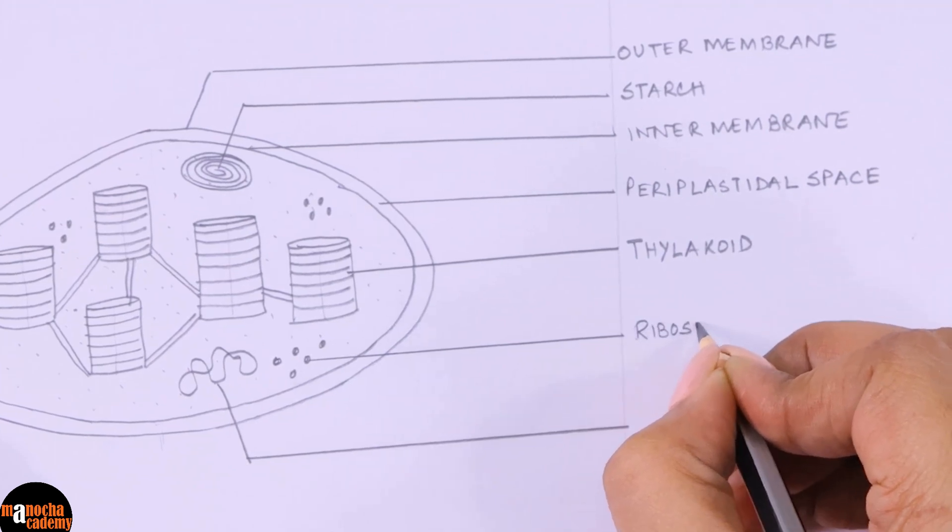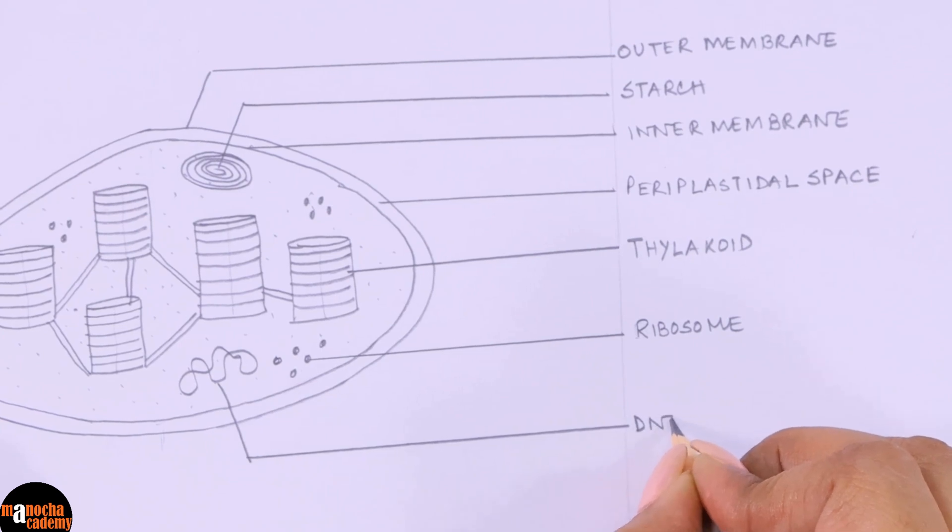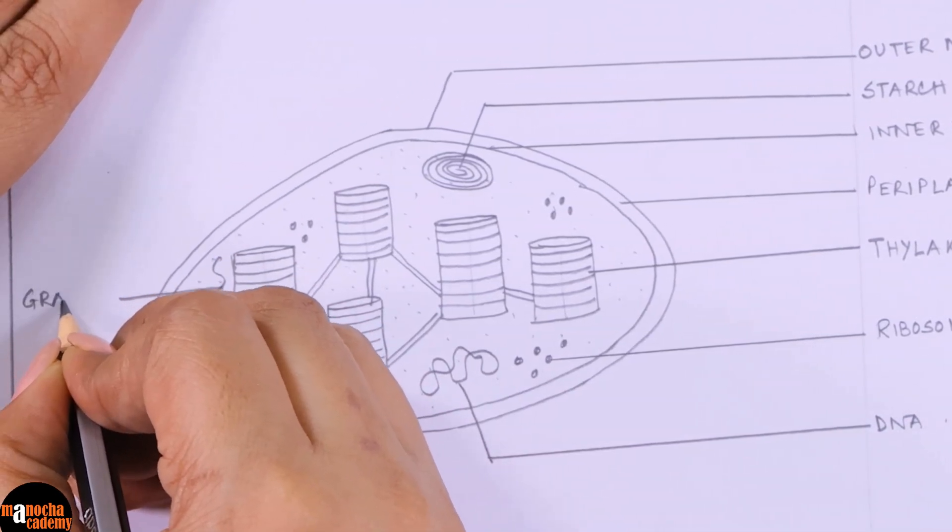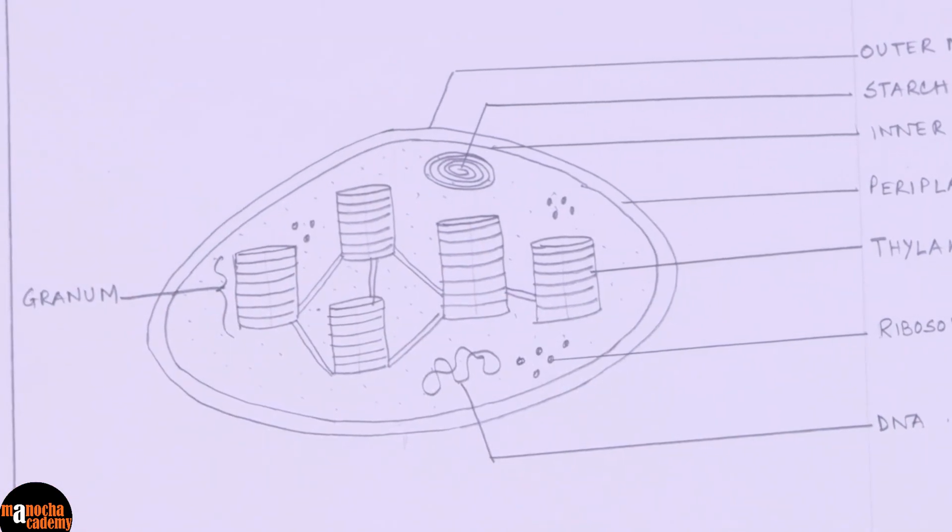These are the ribosomes. I am just labeling one. This is the DNA. And finally this is the granum. As I said granum is singular. Since I am labeling only one I will write granum. And grana is plural.